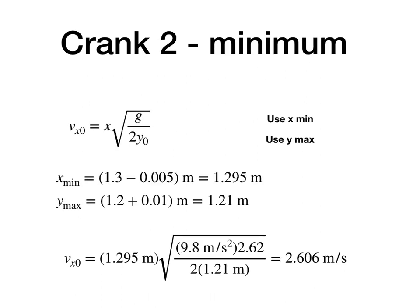Now, crank two. Minimum velocity. So, I have the same equation. It's still vx0 is x times the square root of g over 2*y0. But what values will give me the minimum velocity? So, I'm going to put in the minimum x because I'm multiplying by x. But I'm going to put in the maximum y, because I'm dividing by y. So, if I put in a maximum y and divide by that, it makes a smaller vx0. So, here's a case where I need to look at the numbers I have in my equation. And so, I'm going to put in the x minimum and the y maximum. And I get 2.606 meters per second.